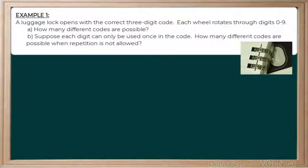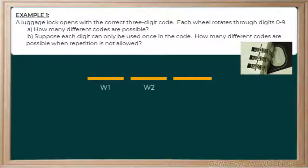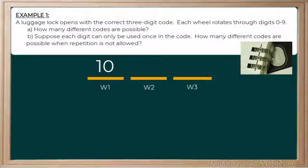I often find it helpful to draw a diagram to visualize the problem. I'm going to start by drawing three blanks that will represent each wheel in the code, and beneath I'll label them W1, W2, and W3. Our next task will be to determine how many possibilities there are for each wheel. Starting with W1 — since we can rotate through digits 0 all the way up to 9, there are 10 possible digits for wheel 1. In this scenario, we are going to assume that we are allowed to use the same number multiple times in our code.